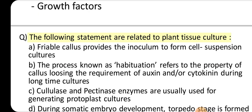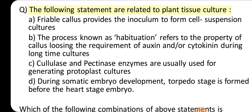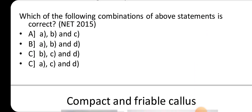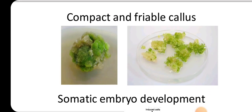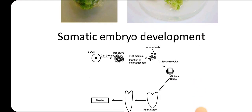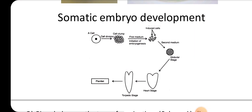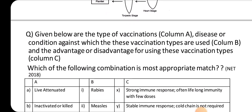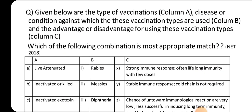The following statements are related to plant tissue culture. A. Friable callus provides the inoculum to form cell-suspension cultures. B. The process known as habitual.